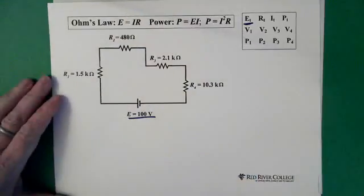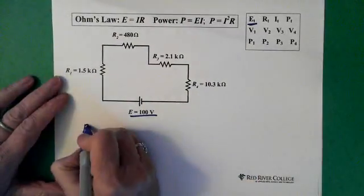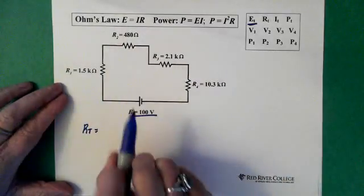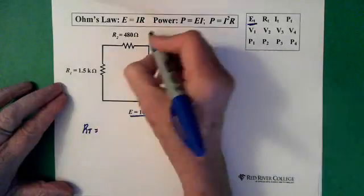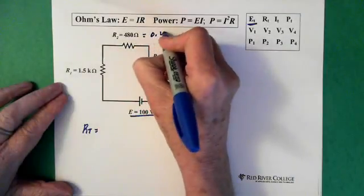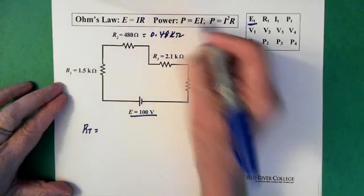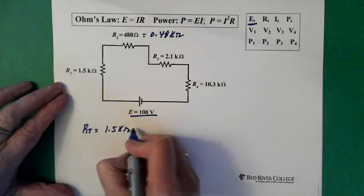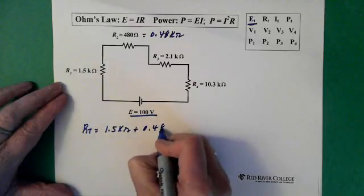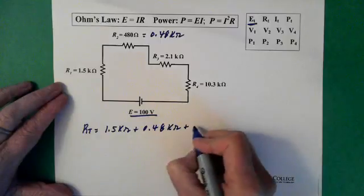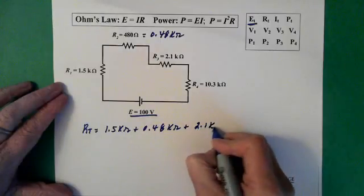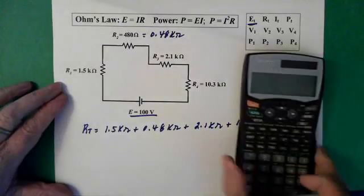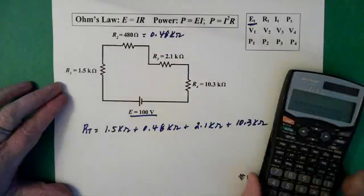First thing we're going to do is solve for our total resistance. So we add up our resistances here, and since I have three of them in kilo ohms I'm going to just change this one to kilo ohms. So it's 0.48 kilo ohms. So adding these up we have 1.5 kilo ohms plus 0.48 kilo ohms plus 2.1 plus 10.3.